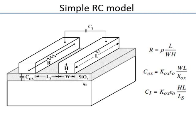The wires are modeled as resistors and capacitors. Whenever you have very high-speed operation with very high frequency content and very low resistance wires, you also have to consider inductance. The resistance of a wire is basically resistivity times length divided by cross-sectional area.